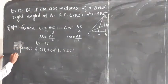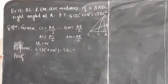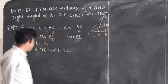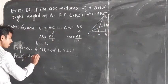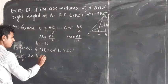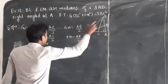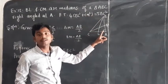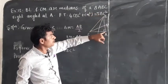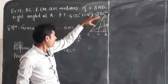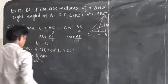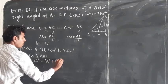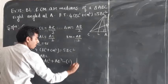Now we write the proof. In triangle ABC, since angle A equals 90 degrees, BC is the hypotenuse opposite the right angle, so BC square equals AC square plus AB square. We call this equation number 1, by Pythagoras theorem.